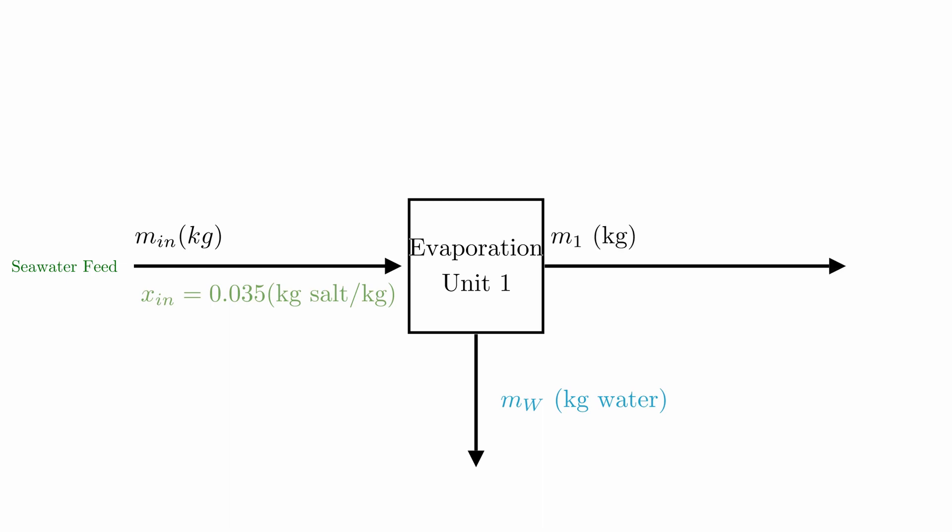I'm using Mn to represent the mass coming into the system, and M1 to represent the mass of the stream coming out of the first unit. Mw represents the pure water coming out of the unit, and the definition of mass fraction given by x will be crucial for the mass balance.